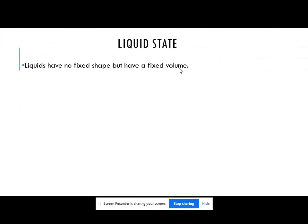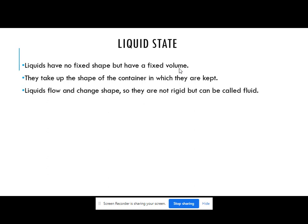Now the next part is liquid state. Liquids have no fixed shape but they have fixed volume. In our previous activity, we have learnt that liquids don't have a fixed shape — they are shapeless. But they have a fixed volume. They take up the shape of the container in which they are kept. Liquids flow and change shape, so they are not rigid but can be called as fluid.